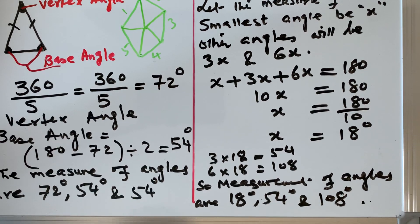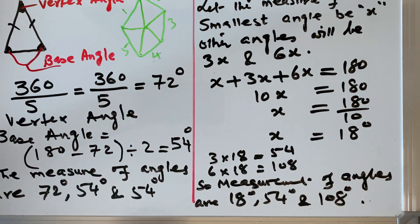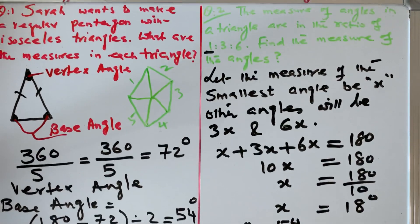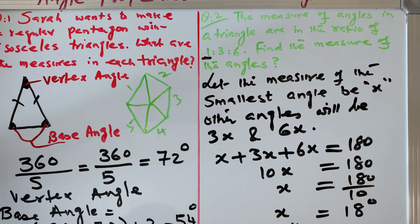Again, if you add them all up, it becomes 180. Sum of interior angles of a triangle is 180. So we solved this way, both of the questions.